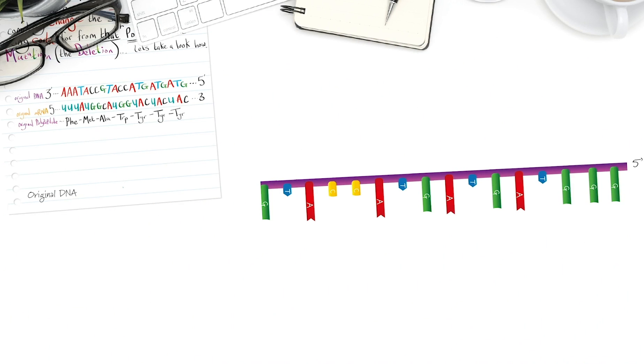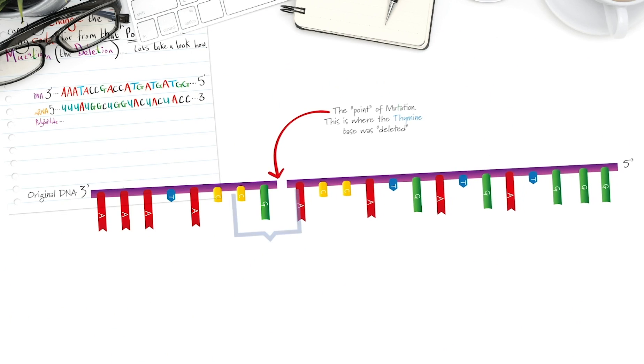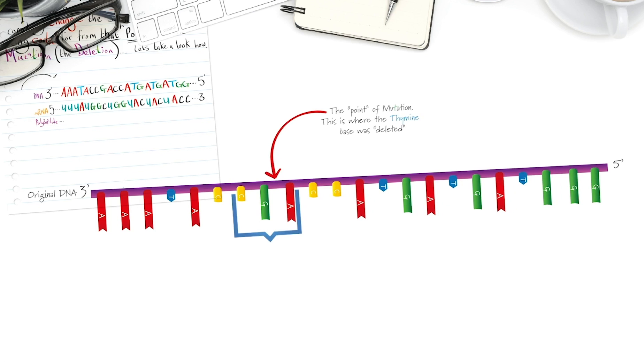Here's our original code. Now let's delete this thiamine base and see what effect it has upon the polypeptide sequence from this point on. Here's our mutated DNA sequence. Notice how the reading frame for the codons has shifted.